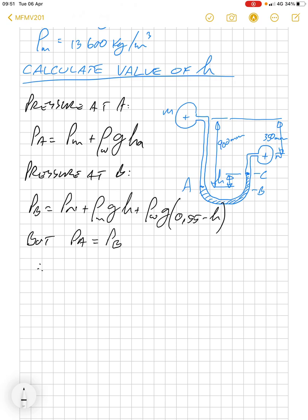we can equate those two equations together and we can say P_M plus 1000 times 9.81 times 0.9 equals